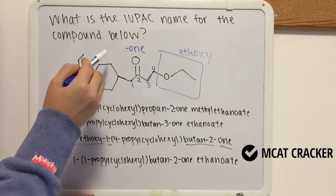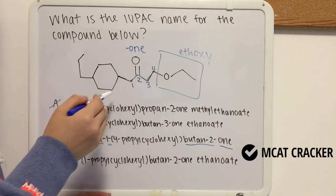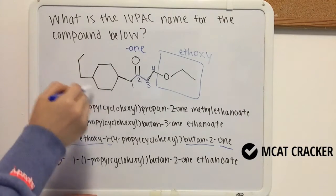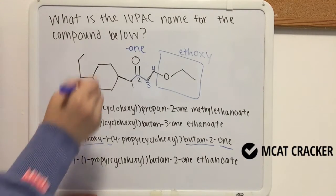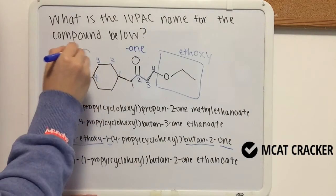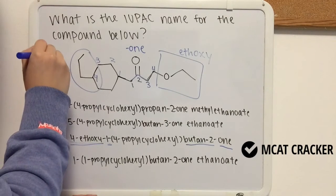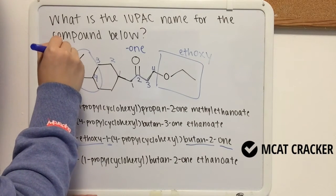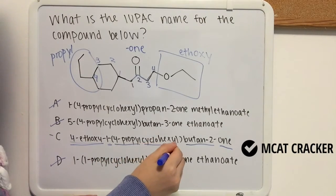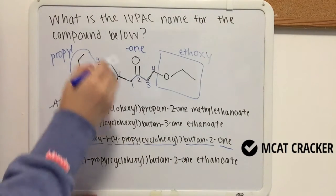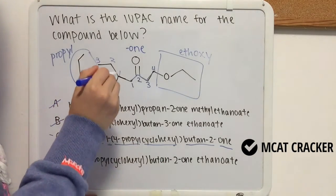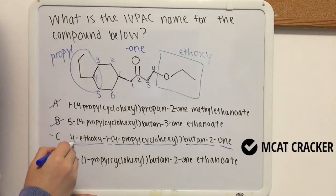At position one, we have our cyclic alkane. In this cyclic alkane, we also have a propyl group. We number the ring: one, two, three, four — so our propyl group is at position number four, just like our answer choice. 'Cyclohexyl' means it's cyclic ('cyclo') and has six carbons ('hex'), so there are six carbons in this ring.